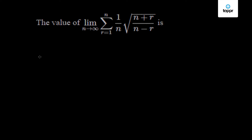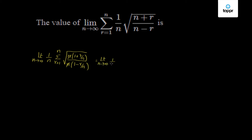This can be expressed as limit n tending to infinity, 1 by n, sigma r equals 1 to n, square root of — by taking n common in the numerator it is (1 plus r by n), and by taking n common in the denominator it is (1 minus r by n). So n gets cancelled, giving limit n tending to infinity, 1 by n, sigma r equals 1 to n, square root of (1 plus r/n) by (1 minus r/n).